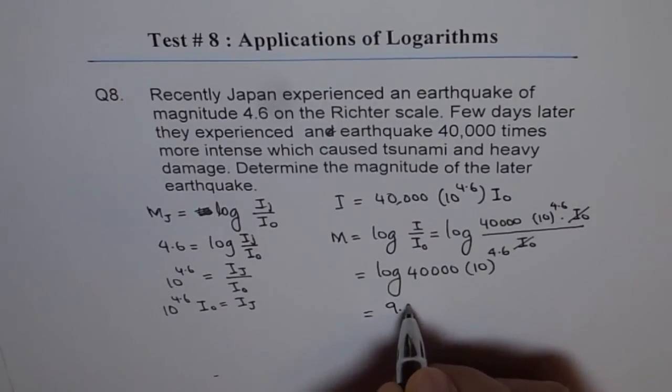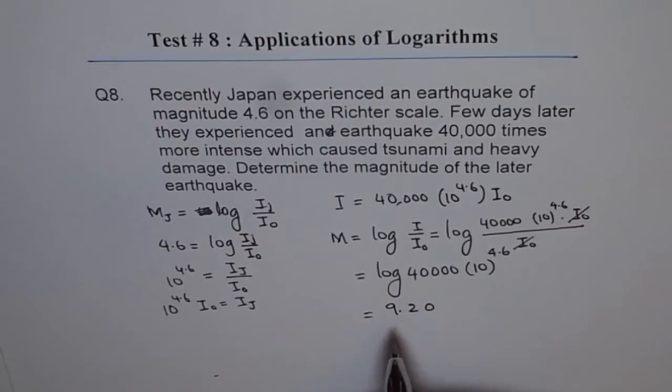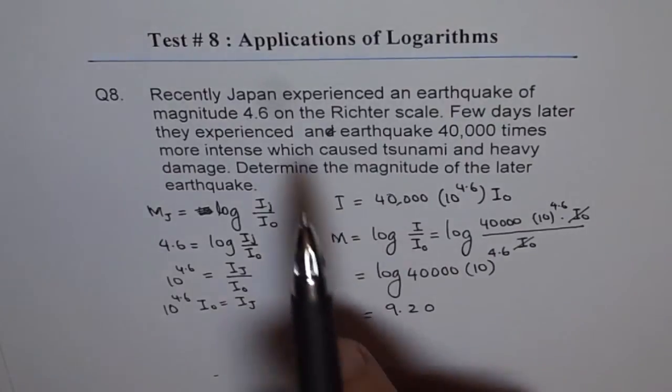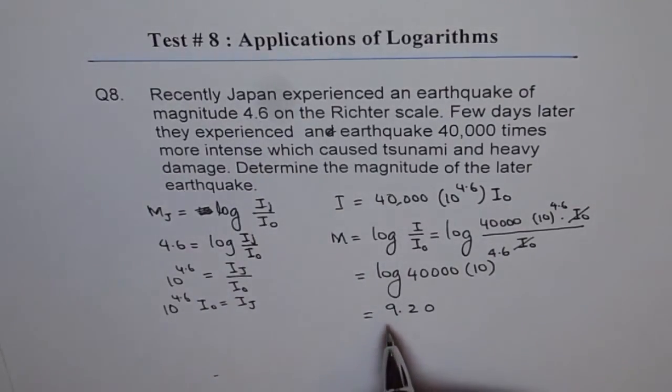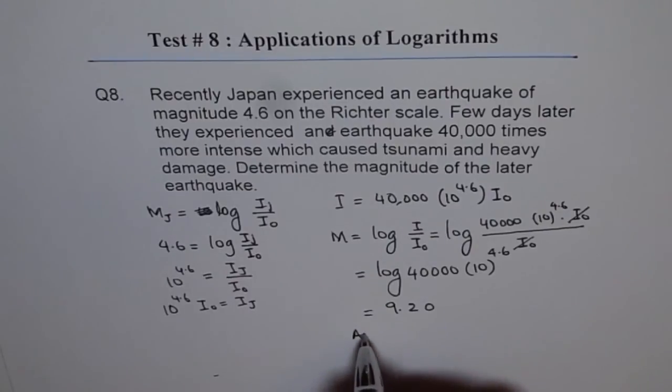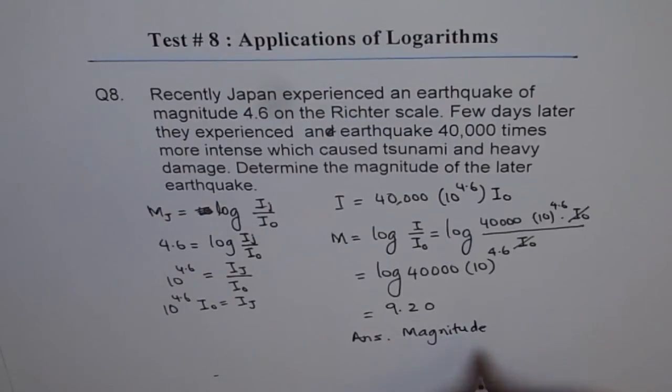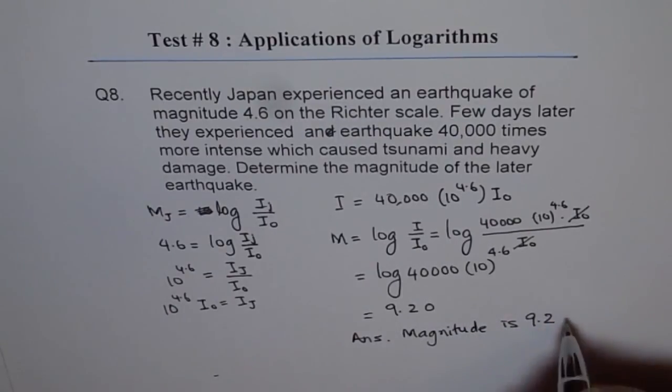We get 9.20. That is the magnitude of the earthquake whose intensity is 40,000 times the previous one. The magnitude changes from 4.6 to 9.20. The answer is the magnitude of the earthquake is 9.20 on the Richter scale.